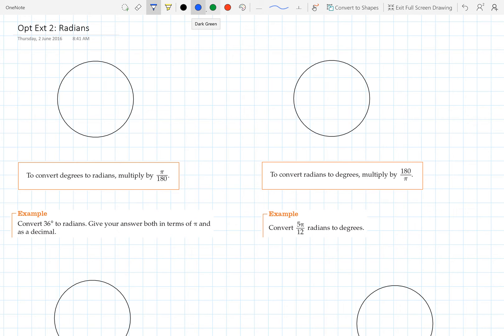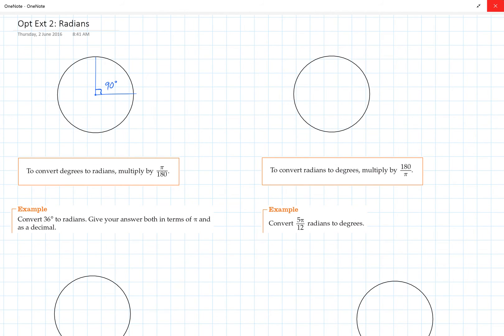For example, if we're looking at this circle here, if we looked at one quadrant of that circle, that would be 90 degrees. But that's not the only way we can describe it. We can also describe it as pi over 2. Now where that comes about is the relationship between a circle and the circumference of a circle.